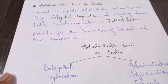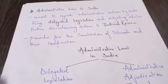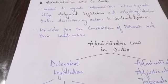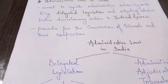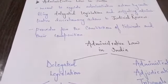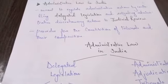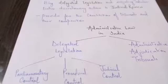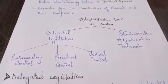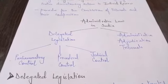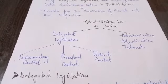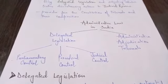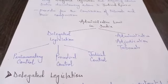Now let's move towards the tools of administrative law in India — what is the importance and what are the tools through which administrative law operates in India. Administrative law is meant to regulate administrative actions by controlling delegated legislation and subjecting administrative discretionary actions to judicial review. It also provides for the constitution of tribunals and their composition. So administrative law has two tools in India: first, delegated legislation, and second, administrative adjudicatory tribunals.